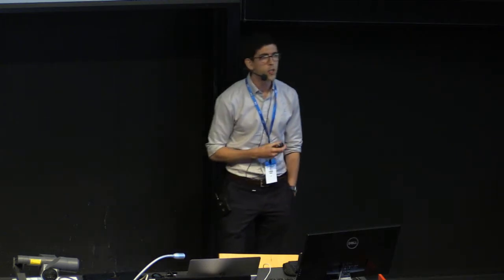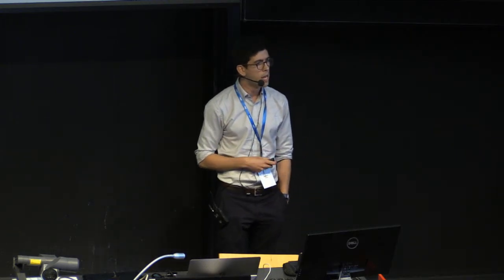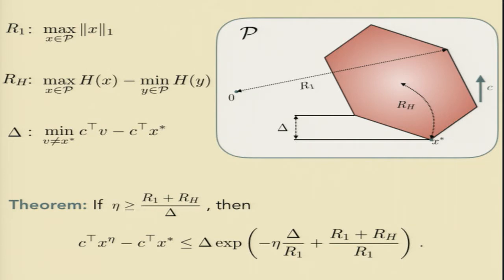then the prediction that our upper bound makes is the following. That after eta is large enough so that it overcomes this thing that scales like one over delta with some radius terms in there, then you get a rate that decays exactly at this speed.